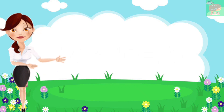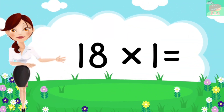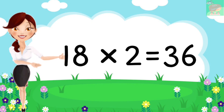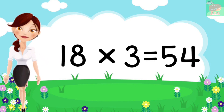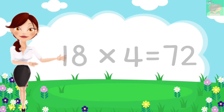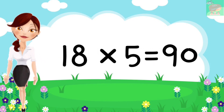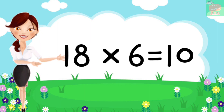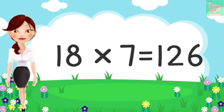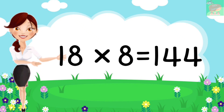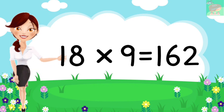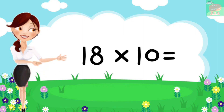Very good, let's repeat again. 18 ones are 18, 18 twos are 36, 18 threes are 54, 18 fours are 72, 18 fives are 90, 18 sixes are 108, 18 sevens are 126, 18 eights are 144, 18 nines are 162, 18 tens are 180.